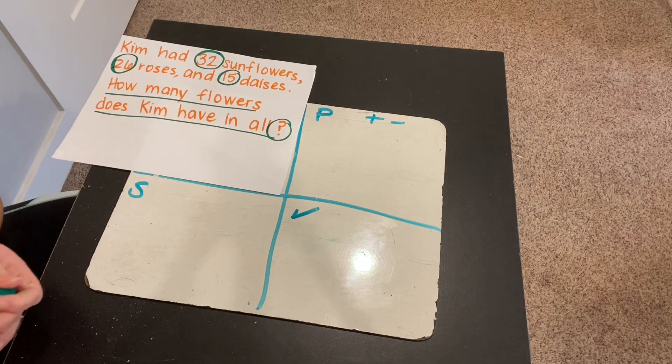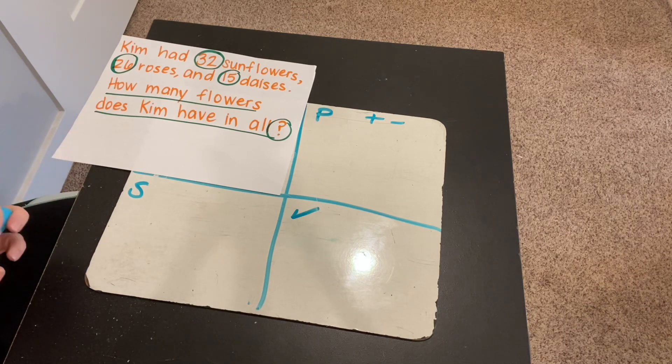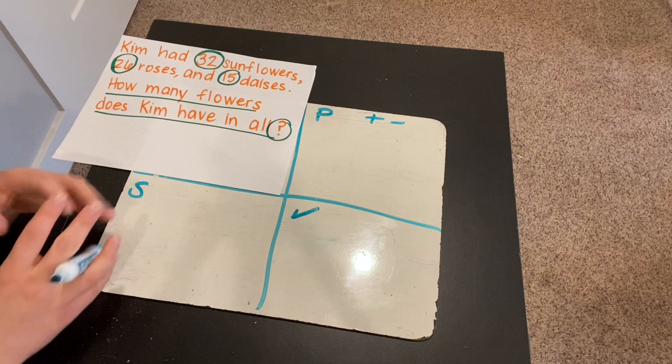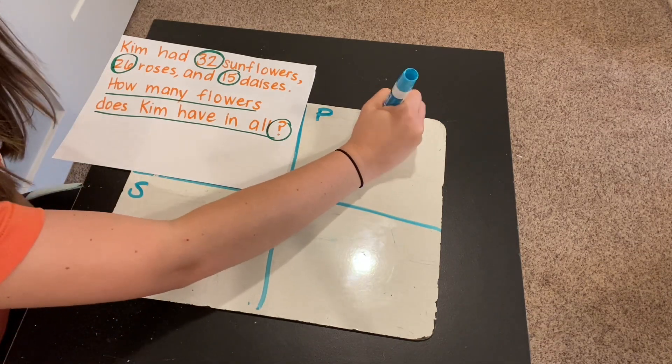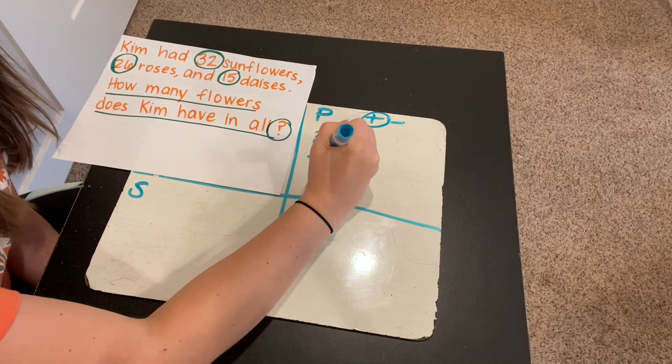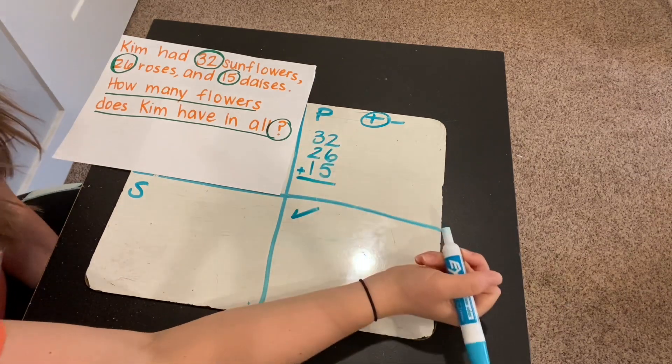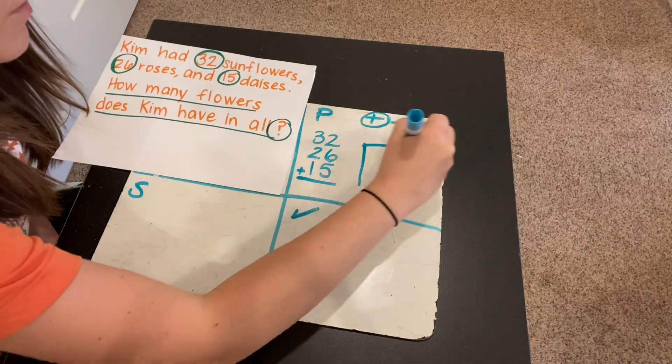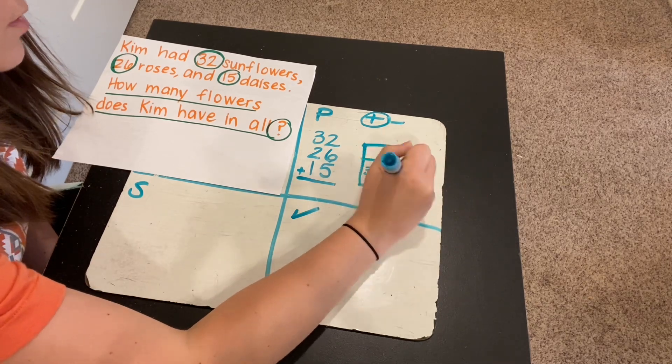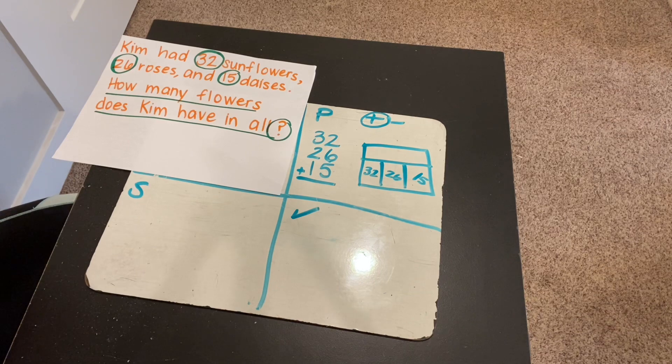All right, now we're going to plan out how we're going to solve this. So if Kim has 32 sunflowers, 26 roses, and 15 daisies, how many numbers are we going to have to be working with here? Well, it's asking us in all how many she has. So we're going to have to add to figure that out. And it looks like we have three add-ins. We have 32 sunflowers, 26 roses, and 15 daisies. So if we add those together, we should be able to figure out how many flowers she has in all. If we were to look at a part-part-whole mat with this, there would actually be three parts. 32, 26, and 15. The whole is going to be however much that equals up to all together.